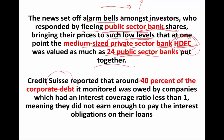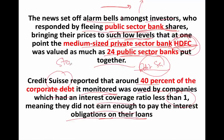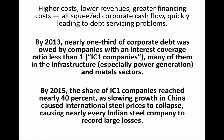Credit Suisse reported that around 40% of the corporate debt it monitored was owed by companies with an interest coverage ratio less than one — meaning they did not earn enough to pay the interest obligations on their loans. They were not able to do debt servicing. Big companies like steel and infrastructure companies take large loans from banks and cannot earn enough money to service that debt. Higher costs, lower revenues, and greater financing costs all squeezed the corporate cash flow, quickly leading to debt servicing problems.